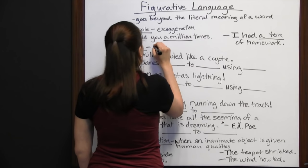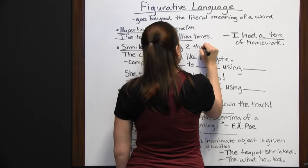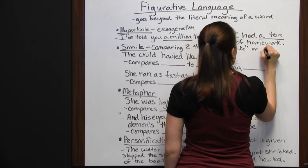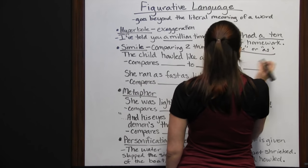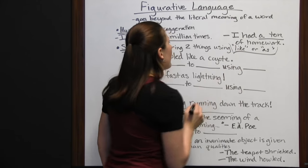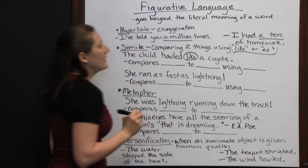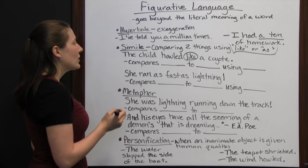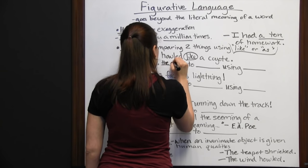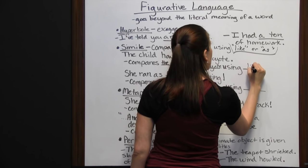Next we have simile, which is comparing two things using "like" or "as." This is very important — you have to use those words "like" or "as," or it's not going to be a simile. For example, "the child howled like a coyote." We see the word "like," and you're comparing two things: the child to a coyote using the word "like."